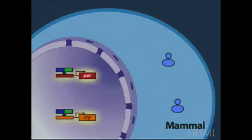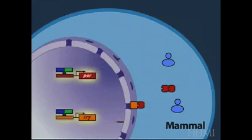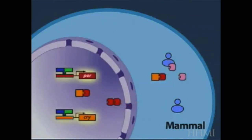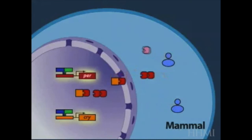Transcriptional activation results in the production of mRNA, which exits the nucleus through nuclear pores and is translated into protein by the ribosomes. PER protein, represented as pink, is susceptible to degradation unless it forms a dimer, represented as red. A dimer is a pair of molecules.